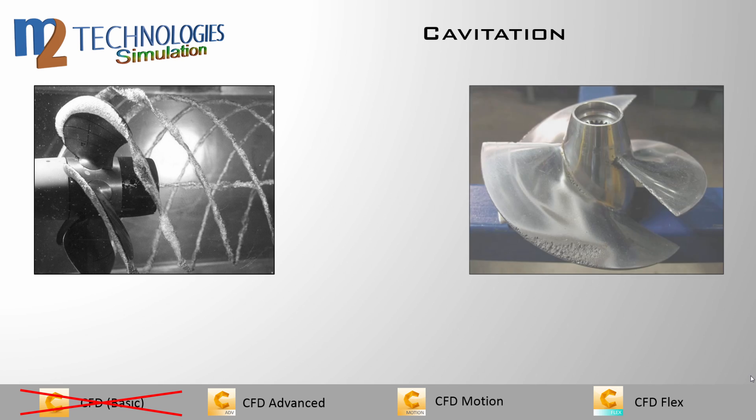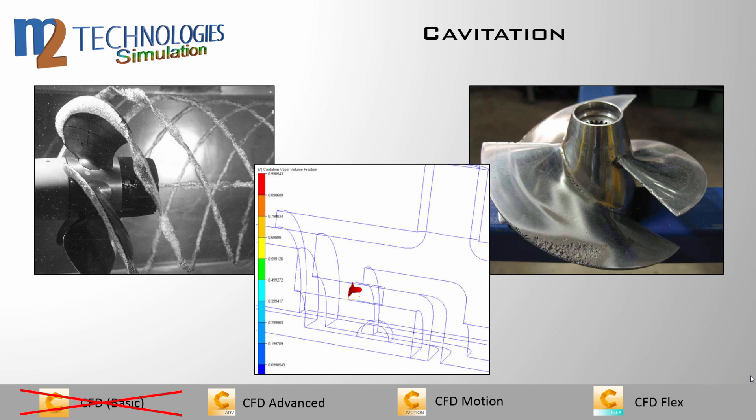Cavitation is a physical phenomenon that occurs in many high-velocity liquid flows. When the liquid pressure falls below the vapor pressure, vapor bubbles form in the liquid. Cavitation is commonly found in high-performance valves, flow control devices, pumps, and propellers, and can greatly reduce the efficiency of these devices. Prolonged cavitation leads to pitting and erosion, resulting in costly downtime and repairs. The cavitation model tracks the vapor bubble volume fraction and predicts the onset and location of bubble formation within the flow.